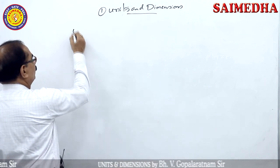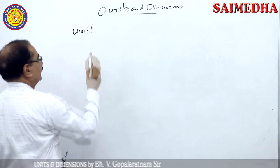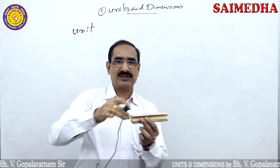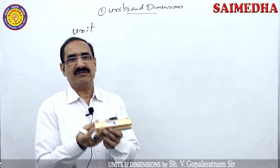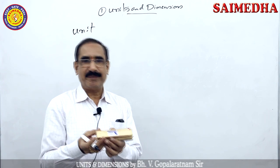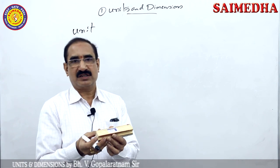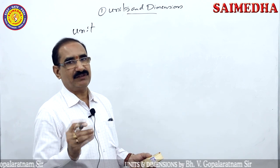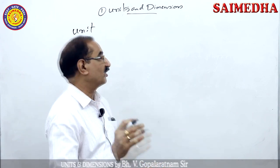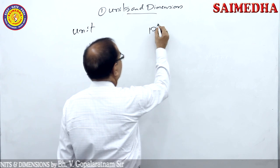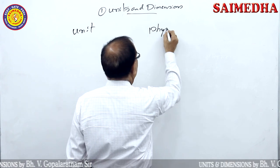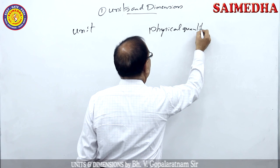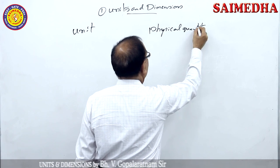What is meant by unit? We are taking a body. The length of this body is to be measured, and the mass of this body is to be measured. Length and mass are physical quantities. The quantity which can be measured is called a physical quantity.